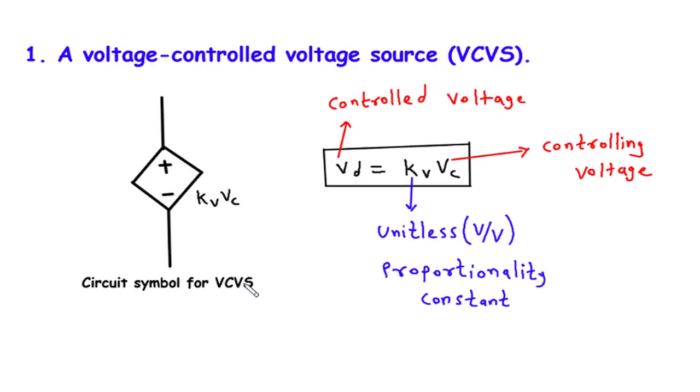Another application of the VCVS is in filters, where we can adjust the cutoff frequency based on the controlling voltage. This enables us to selectively pass or reject certain frequencies in a signal, contributing to various filtering techniques used in audio processing, communication systems, and more.